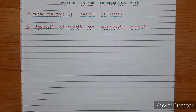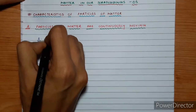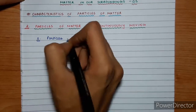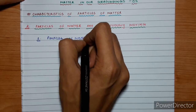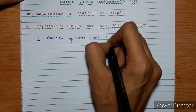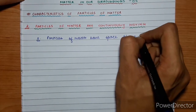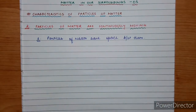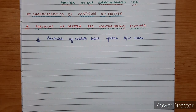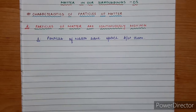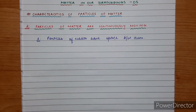Previous lectures में हमने पढ़ा था first characteristic of particles of matter — वो यह थी कि particles of matter have space between them। जो particles होते हैं matter के, उनके बीच में space होती है। तभी तो जब हम salt या sugar water में डालते हैं तो उसका volume increase नहीं होता, क्योंकि water के particles के बीच के empty spaces में salt और sugar जाकर छिप जाता है।